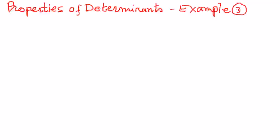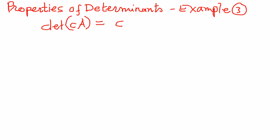Welcome to my presentation. In this presentation, let us try to see an example where we can prove one of the properties of determinants. The property tells us that the determinant of a scalar times a matrix A is going to be equal to the scalar raised to the power of n times the determinant of A. So let us take a simple example and try to prove that.